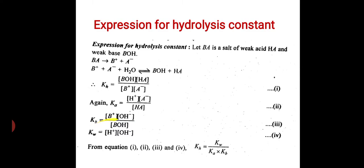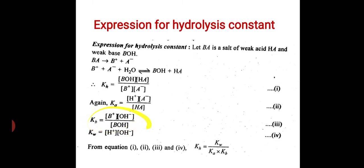Kb is the ionization constant for the weak base. Weak base BOH undergoes ionization to form B+ and OH−. Its ionization constant Kb equals the molar concentration of B+ times the molar concentration of OH−, divided by the molar concentration of BOH — equation 3. The ionic product of water is Kw = [H+][OH−] — equation 4.